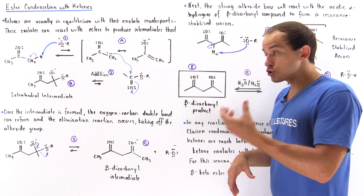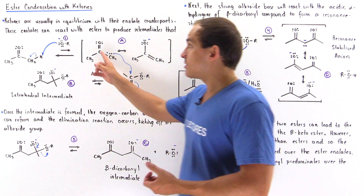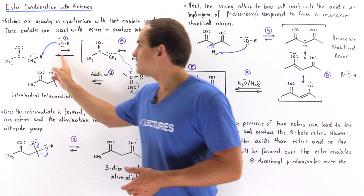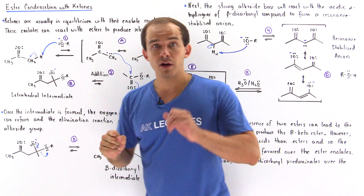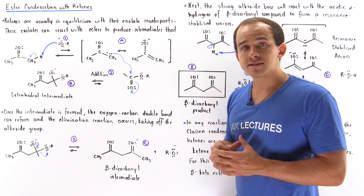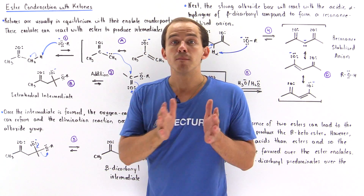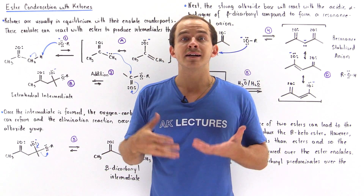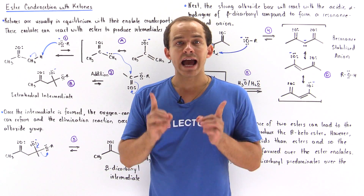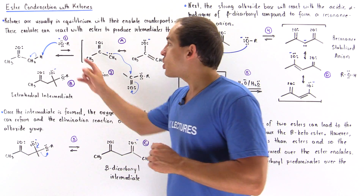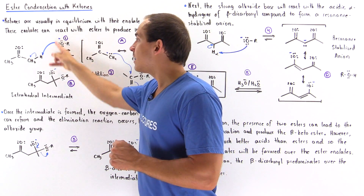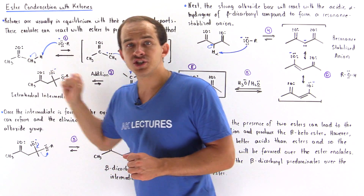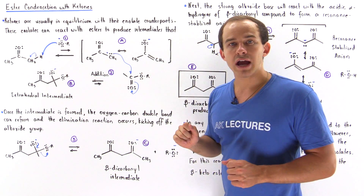Well, we have a strong base — the alkoxide — and two acids. One of these acids is our ketone; the other acid is our ester. Ketones are more acidic than esters because they contain more acidic alpha-hydrogens. And so it's the strong base, the alkoxide, that reacts with our ketone and not with our ester.